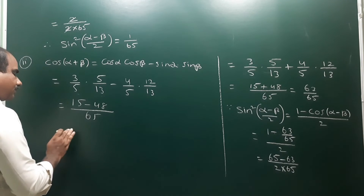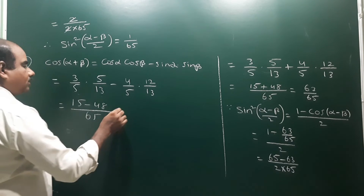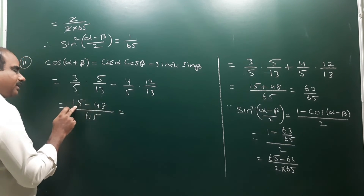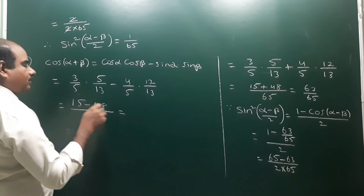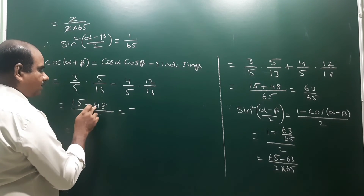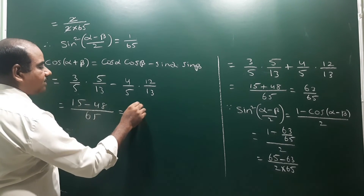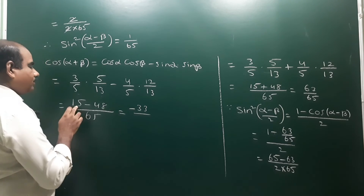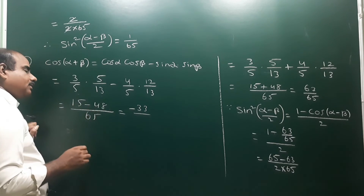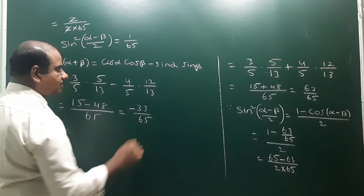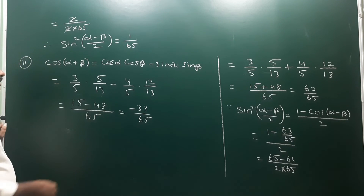So 15 minus 48 gives a negative result. Since 48 is greater than 15, the answer is minus 33. Therefore cos(α+β) = −33/65.